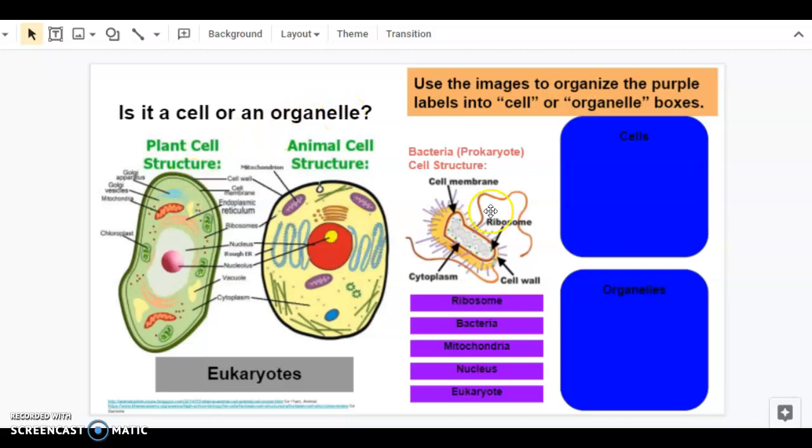Inside each cell are cell parts called organelles. Here we have an image of three different cells: a plant cell, an animal cell, and a bacteria cell. As you can see, they look different from each other.